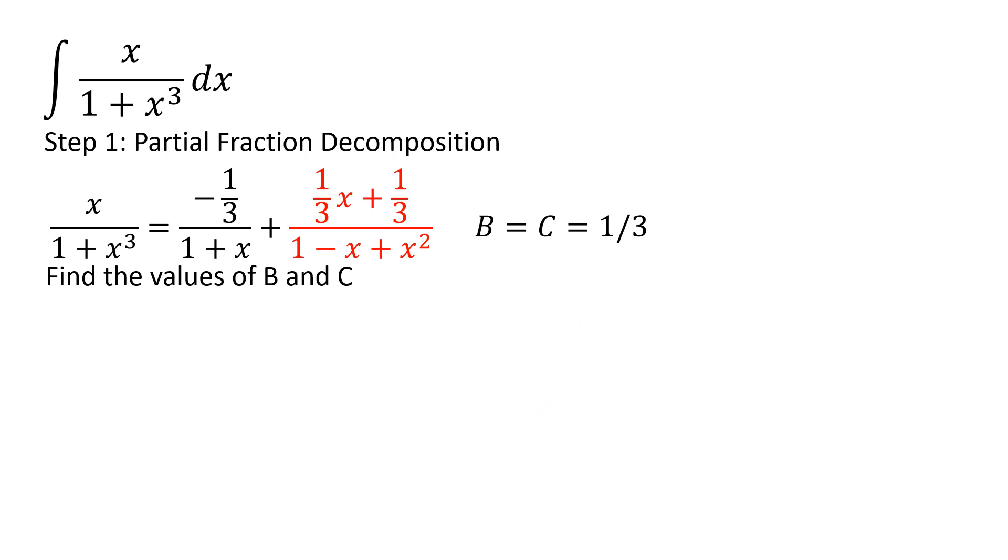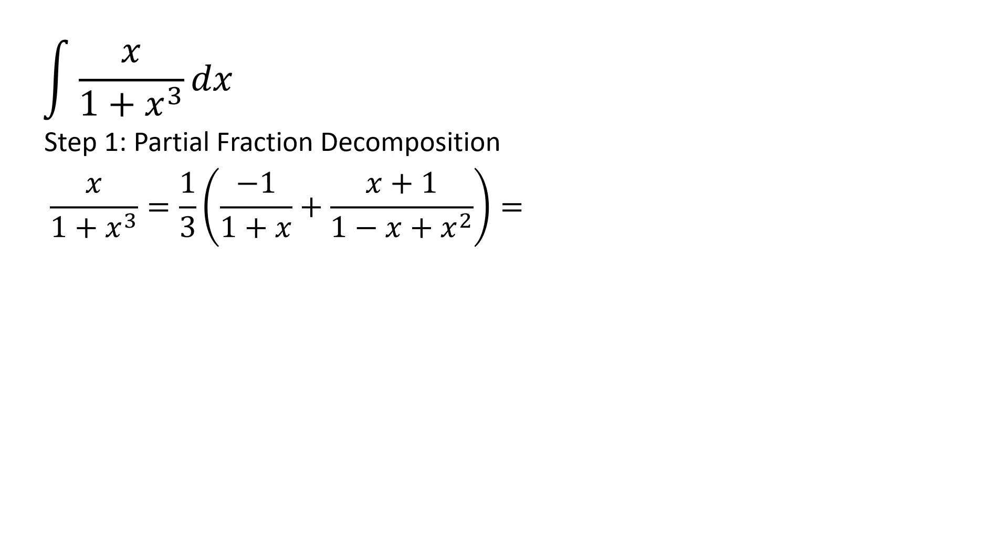I can now insert these values in place of B and C. Since all the numerators have a 1 third in them, I can factor out a 1 third and pull it to the outside of the parentheses. And I can also reverse the order of the fractions. I can now insert this into my integral to get a rewritten integral that is somewhat easier to solve.